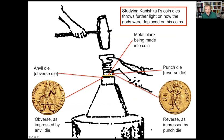On the famous Kanishka casket in Peshawar Museum, excavated from a site near Peshawar, the inscription says it was an offering made to the monastery of Kanishka in the city of Kanishka. It shows Kanishka offering flowers to the Buddha, accompanied by two gods that also appear on his coins: the moon god Mao and the sun god Mero. So both contemporary inscriptions, contemporary art, and the coins are showing the same thing — there is a relationship between the king and the gods which enables the king to be king. The coins of Kanishka were made in the Greek coinage tradition, with the obverse on the anvil and the reverse on the punch.